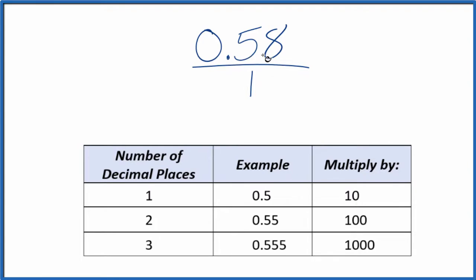We need to get 0.58 to a whole number. So I can see I have two decimal places. Two decimal places, we're going to multiply the numerator here by 100, like this. 100 times 0.58, that equals 58, and that's a whole number.